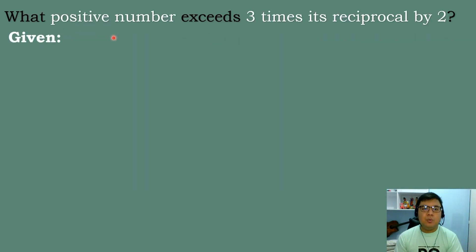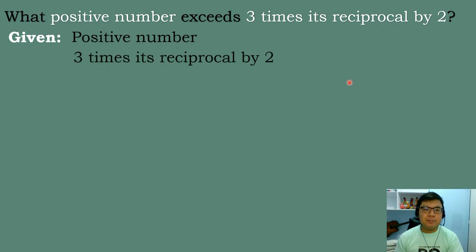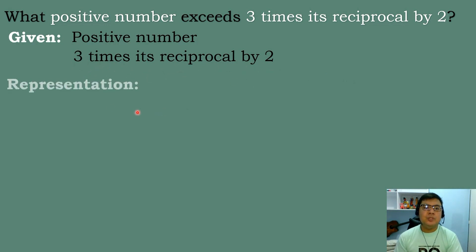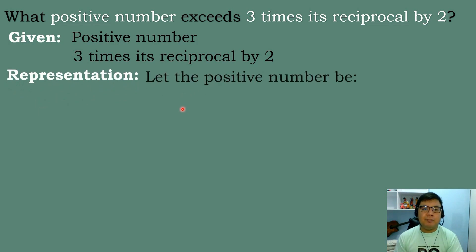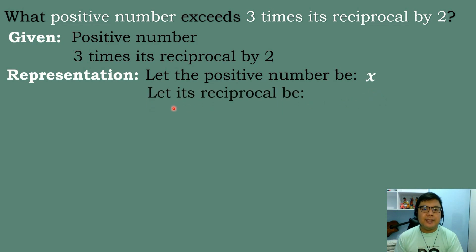Let's solve our next problem. What positive number exceeds 3 times its reciprocal by 2? Let's identify the given: a positive number, and the positive number exceeds 3 times its reciprocal by 2. Let's represent the problem: let the positive number be x, and let its reciprocal be 1 over x.